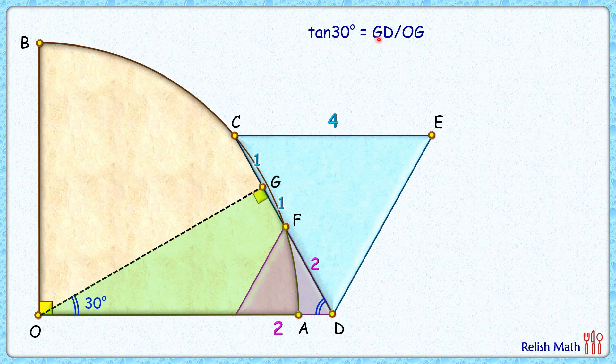Applying trigonometry, we get tan 30° is perpendicular upon base. Putting the values, tan 30° is 1 by root 3, and GD length is 1 plus 2, or 3 centimeters.